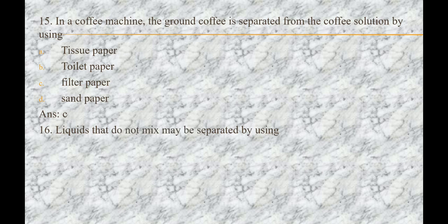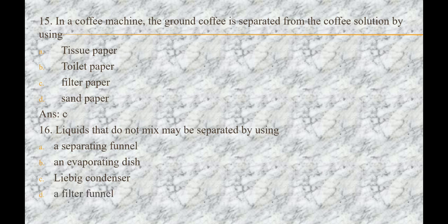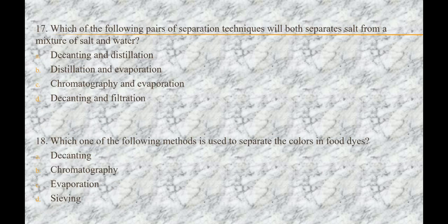Next question is: liquids that do not mix can be separated by using — option A) a separating funnel, option B) an evaporating dish, option C) a Liebig condenser, option D) a filter funnel. The answer is A, that is a separating funnel.